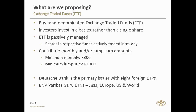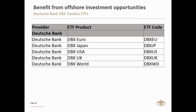Deutsche Bank is the primary issuer — they have eight products: five ETFs and three ETNs. Then BNB Parabas, they've got what they call Gurus, which are ETNs — exchange-traded notes — with exposure to Asia, Europe, the US, and world. You can see this on the next slide.